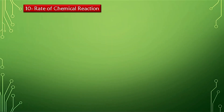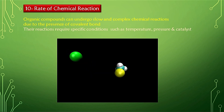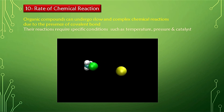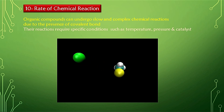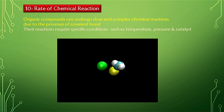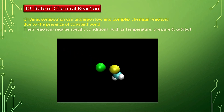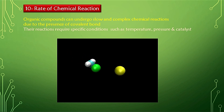The next property is the rate of chemical reaction. Organic compounds undergo slow and complex chemical reactions due to the presence of covalent bonds. Because there are no charges present in non-polar covalent compounds, their reactions are very slow and sometimes require specific conditions such as temperature, pressure, and a catalyst. Organic compounds are formed naturally inside the earth's surface over hundreds of years, requiring temperature, pressure, and bacterial action as catalysts — so their reactions are also very slow.